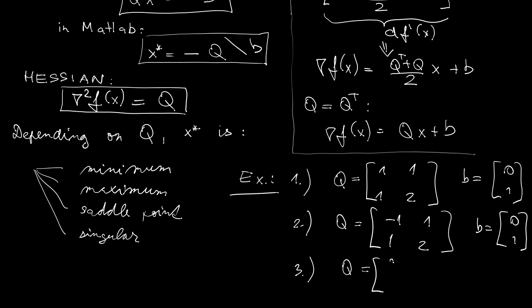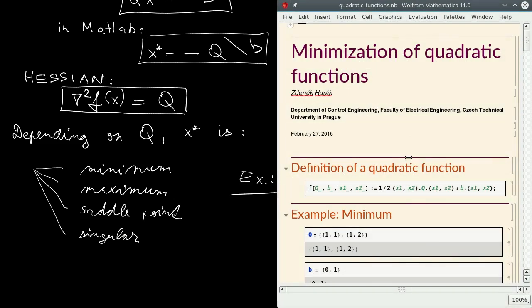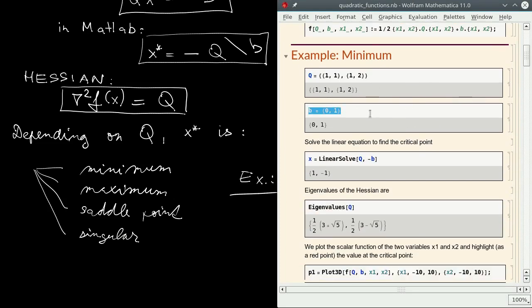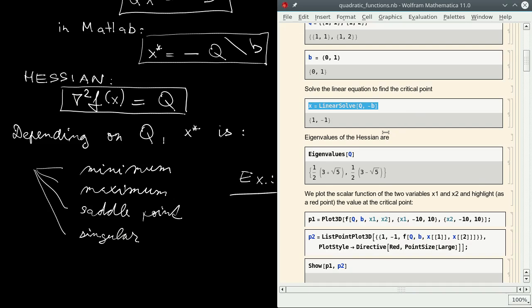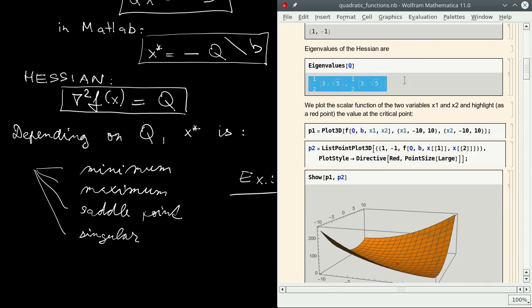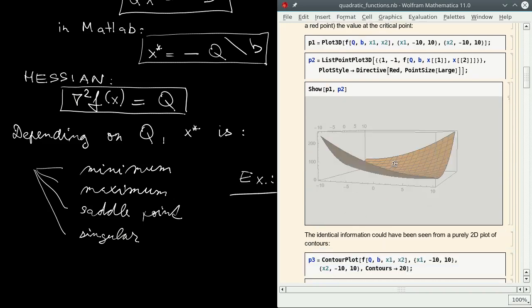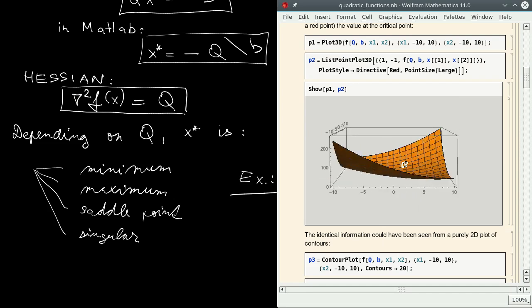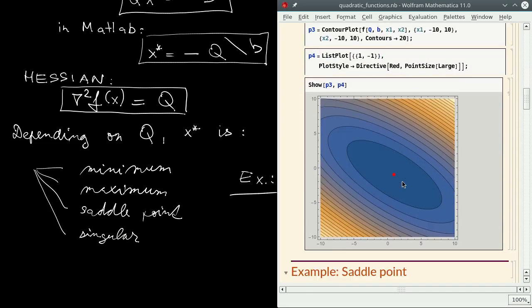Let's look at how the gradients look like, what the critical points are, and in particular what the eigenvalues of the Hessian look like. In the first case, the eigenvalues of the Hessian are both positive, which immediately tells us that sufficient conditions of minimality are satisfied. Indeed, the critical point is a minimum, which is also confirmed by the contour plot.